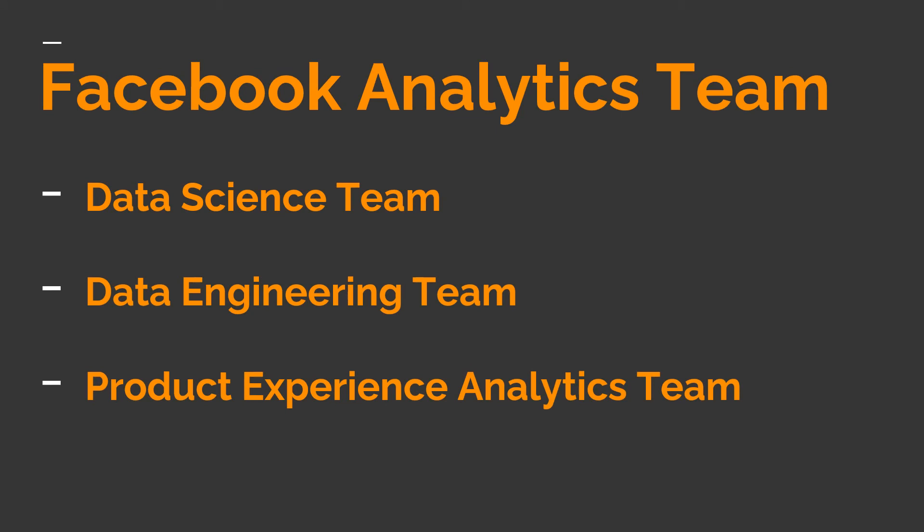At Facebook, the analytics team is made up of three different functions, including data science, data engineering and product experience analytics teams. These three functions are the core analytics partners, which is unique to Facebook. They bring teams together because each one has key strengths and specific roles that make their products better and more effective for their advertisers. The interplay between the three functions helps them collaborate well with cross-functional partners within Facebook and ensures they prioritize and contribute to the most impactful initiatives.